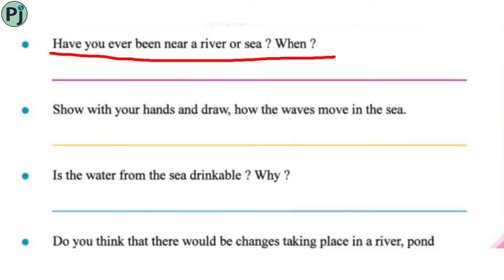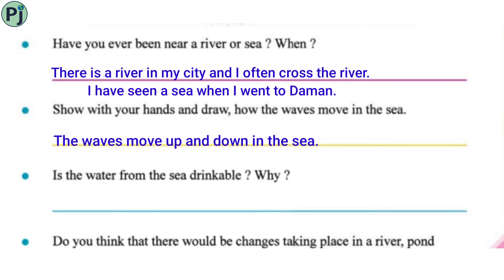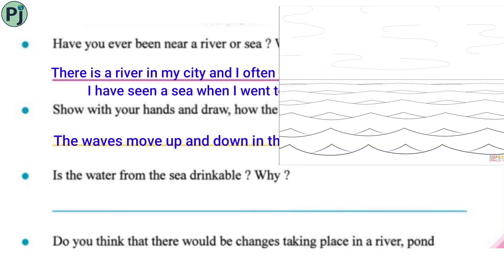Have you ever been near a sea or river, and when? There is a river in my city and I often cross it. I have seen a sea when I went to Daman. Show with your hands and draw how the waves move in the sea. The waves move up and down in the sea.